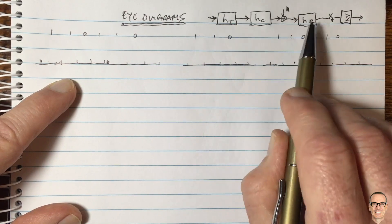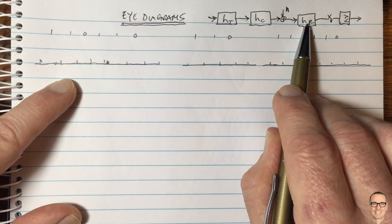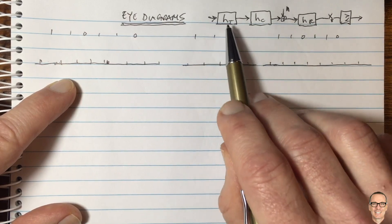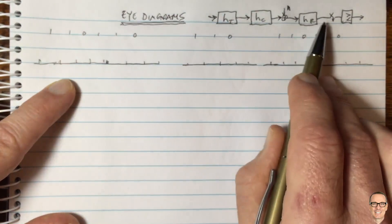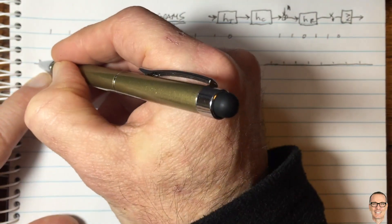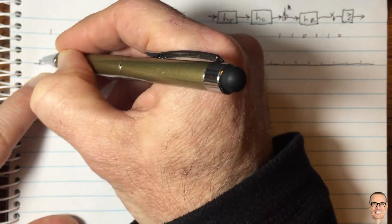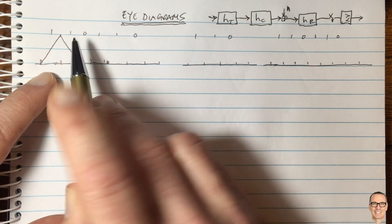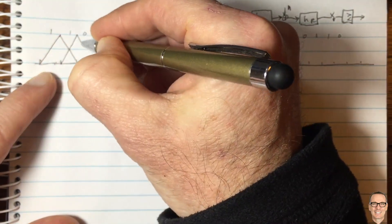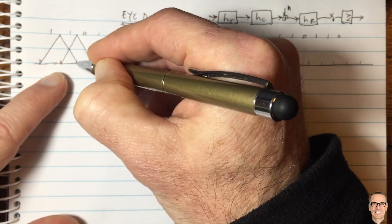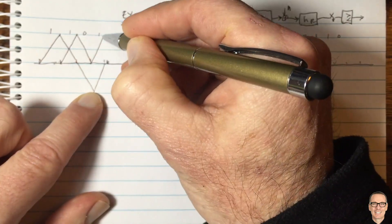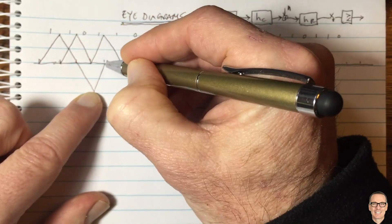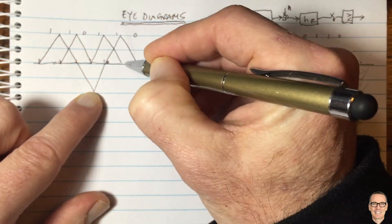We'll start with considering a square pulse, which means the filter is matched as a square and the convolution of these two is a triangle, which is the signal that will be sampled. So for a square input pulse the sampled signal is a triangle. Let's plot it here for this data sequence: if you're sending a one you get a positive triangle, and with antipodal signaling a zero gives a negative triangle. In this example we're plotting a positive one followed by another positive one, followed by a zero.